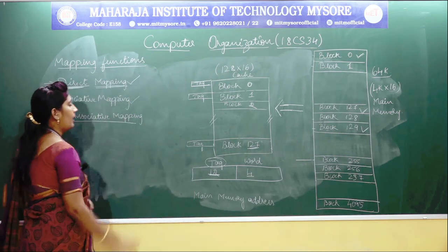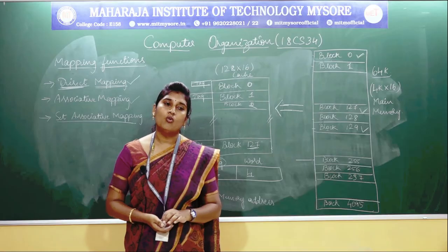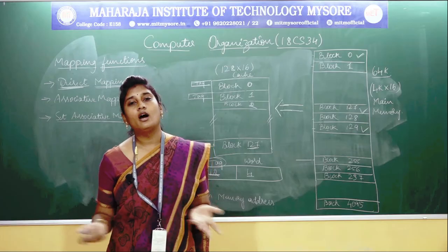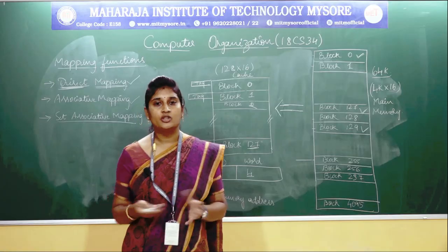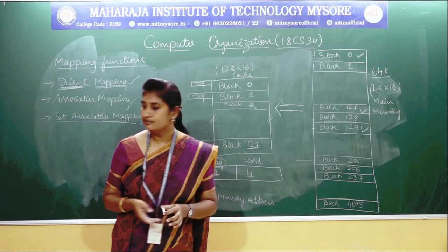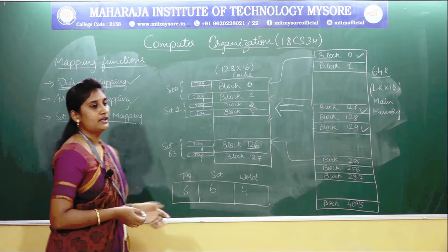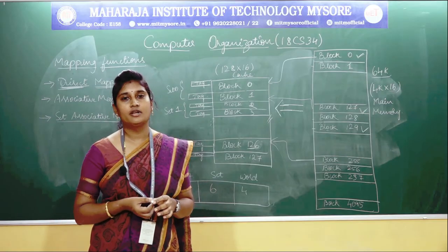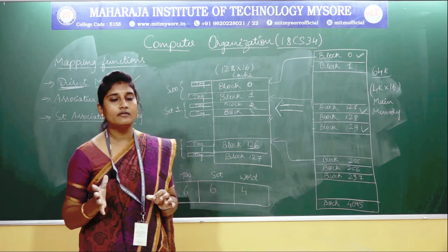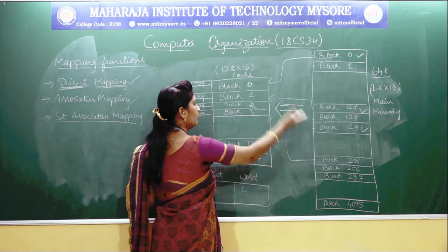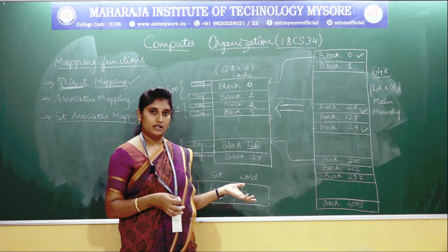Let us look at the last type of mapping technique — set associative mapping. What do you mean by set associative and how is the data mapped from the main memory to the cache memory? There is not much difference between associative mapping and set associative mapping. Whatever mapping techniques you were doing from the main memory to your cache memory, the same thing will be done in set associative also.